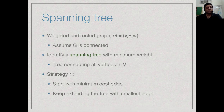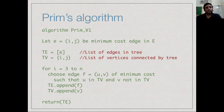The strategy in Prim's algorithm is to start with a minimum cost edge and keep extending the tree with the smallest edge connected to the current tree. TE is a list of edges that form the tree. We add the minimum cost edge and note that vertices i and j are now connected, leaving n minus 2 vertices which still have to be connected. So we repeat n minus 2 more times, adding one vertex per iteration.